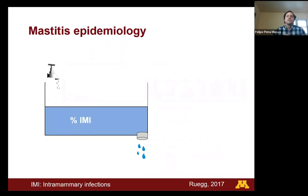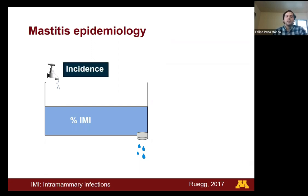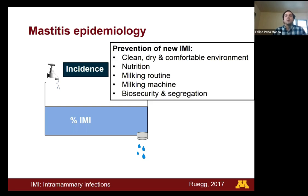In order to go deeper into mastitis epidemiology and the factors that can lead to mastitis, I wanted to use this graphical representation in which the amount of water represents the proportion of cows or quarters with intramammary infections. There will be some factors that lead to a higher incidence of new cases, and we also have management tools to control them, such as maintaining cows in a clean, dry, and comfortable environment to reduce the bacterial load, having adequate nutrition, a good milking routine, good maintenance of the milking machine, and the use of biosecurity and segregation measures to prevent the spread of contagious pathogens within and across dairy farms.